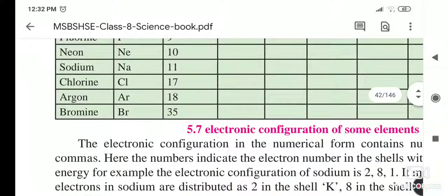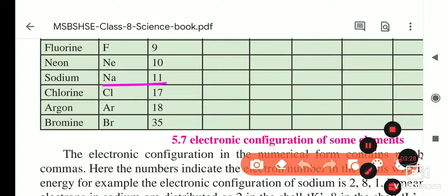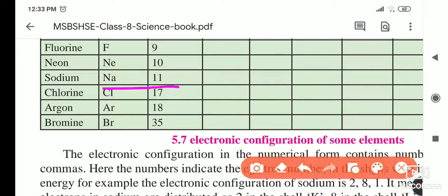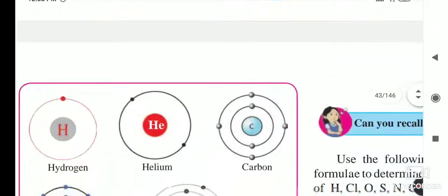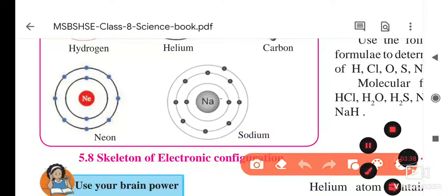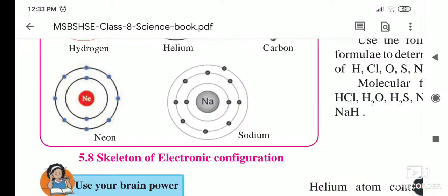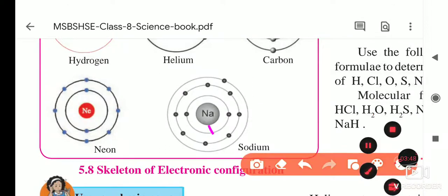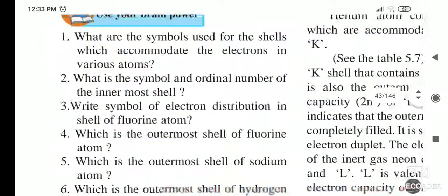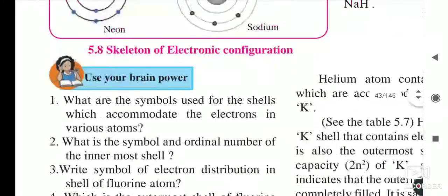Now sodium: sodium's atomic number is 11. Looking at its electronic distribution — first shell has 2, second has 8, and the third has 1. So the outermost shell for sodium is the M shell.